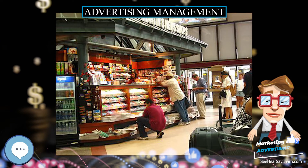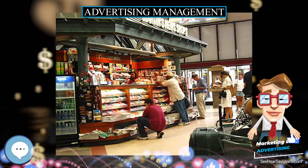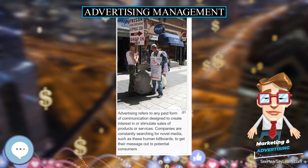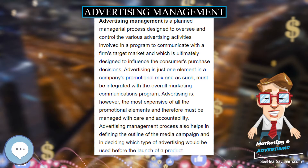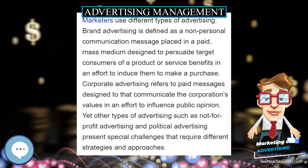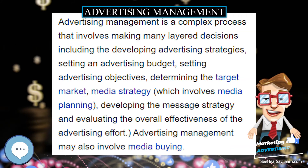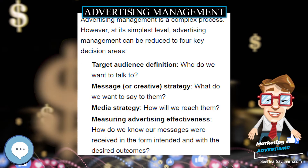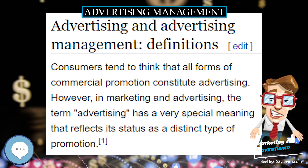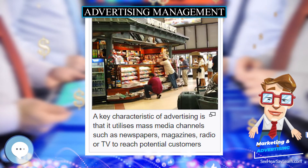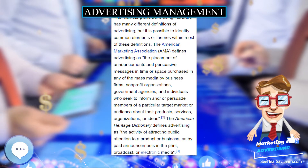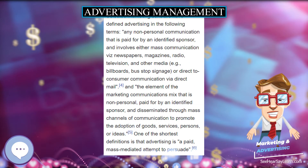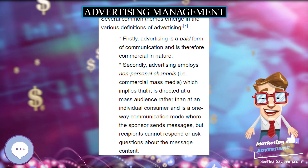Two of the more widely used integrative models are the grids developed by Foote, Cone and Belding (FCB), and another devised by Rossiter and Percy as an extension of the FCB approach. The FCB planning grid was developed by Richard Vaughan, senior vice president at advertising agency Foote, Cone, and Belding, in the 1980s. The planning grid has two dimensions — involvement and information processing — each with two values representing extremes of a continuum: involvement (high/low) and information processing (thinking/feeling). These form a two-by-two matrix with four cells representing different types of advertising effects.